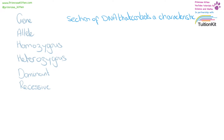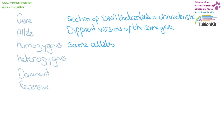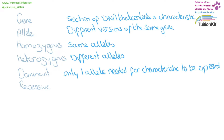A gene is a piece of DNA that controls a characteristic — for example, the gene for hair color or eye color. Alleles are different versions of the same gene, so if the gene is for eye color, you can have a blue, brown, or green eye color allele. Homozygous means you have two alleles the same; heterozygous means you have different alleles. Dominant means you only need one allele for that characteristic to be expressed, and recessive means you need both alleles the same for that characteristic to be expressed.